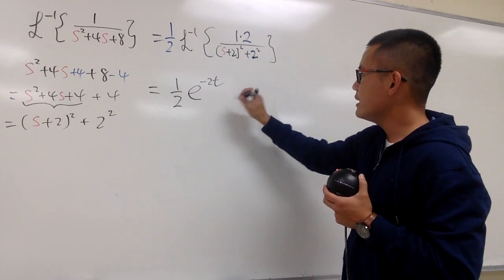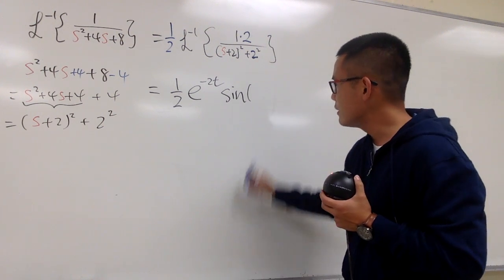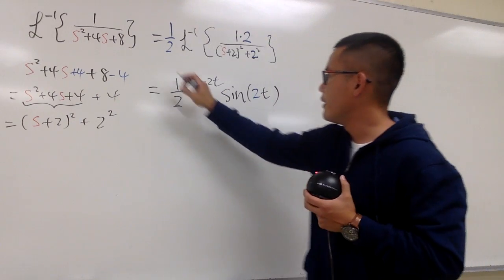So this is what we need. And then we will have the sine of 2t. So let me just emphasize the 2 in blue right here. 2t. And that's it.